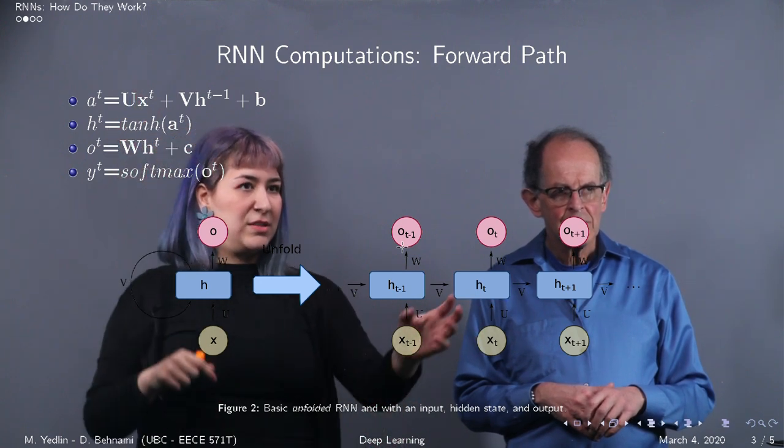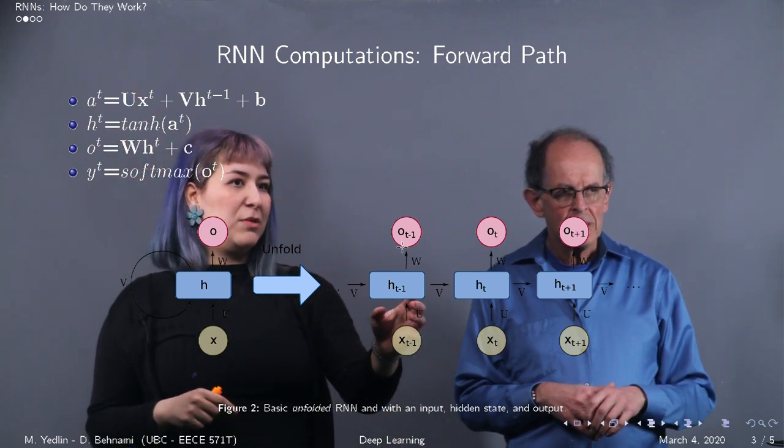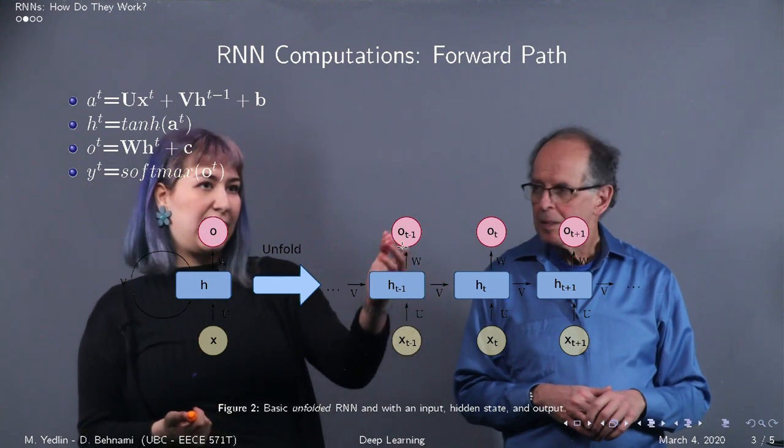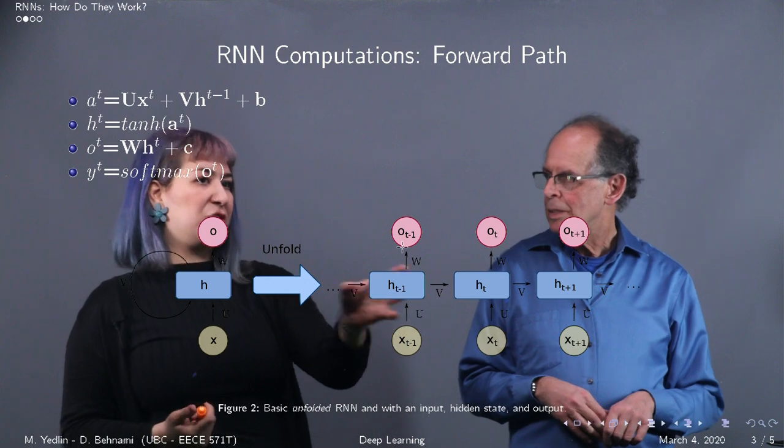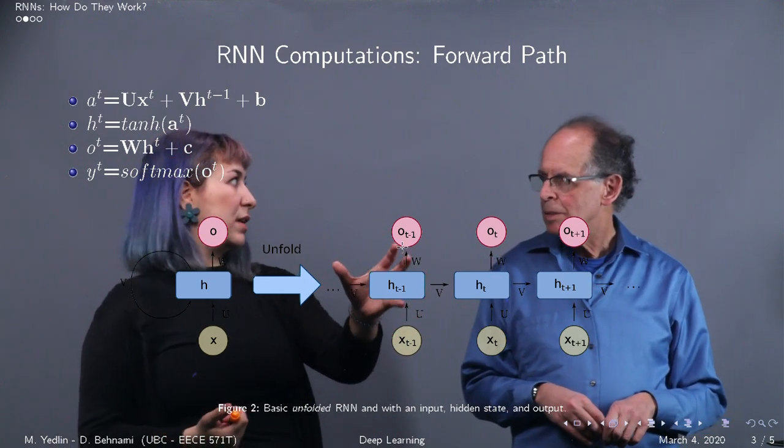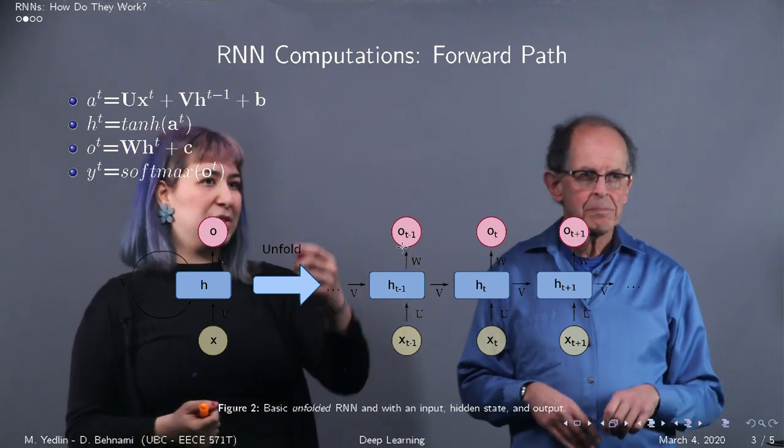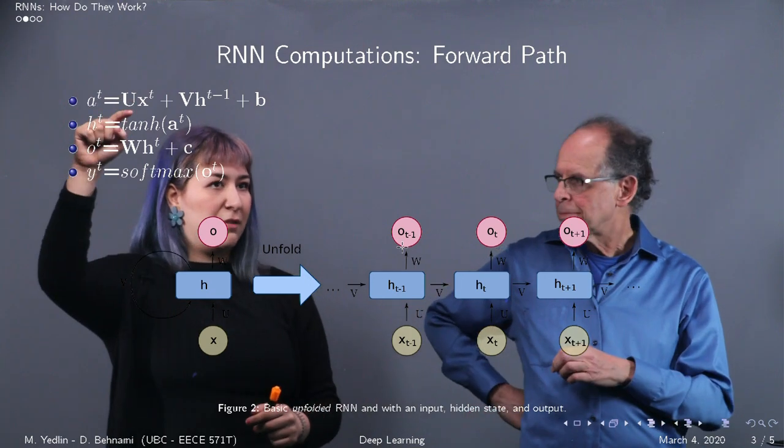We also have a term that's associated with the previous time step, which is the hidden state h t minus 1 multiplied by some other set of parameters v, which is associated with the hidden state, plus some bias b. So we start off over there.